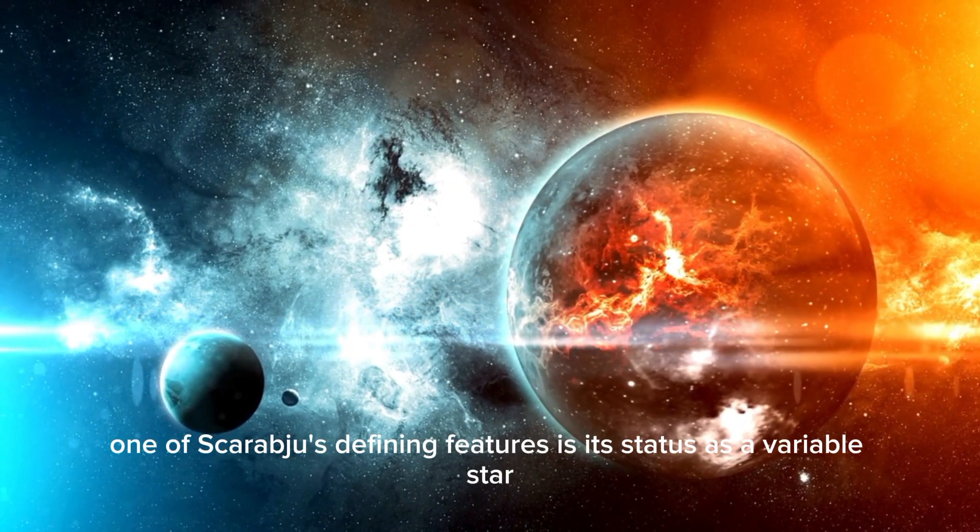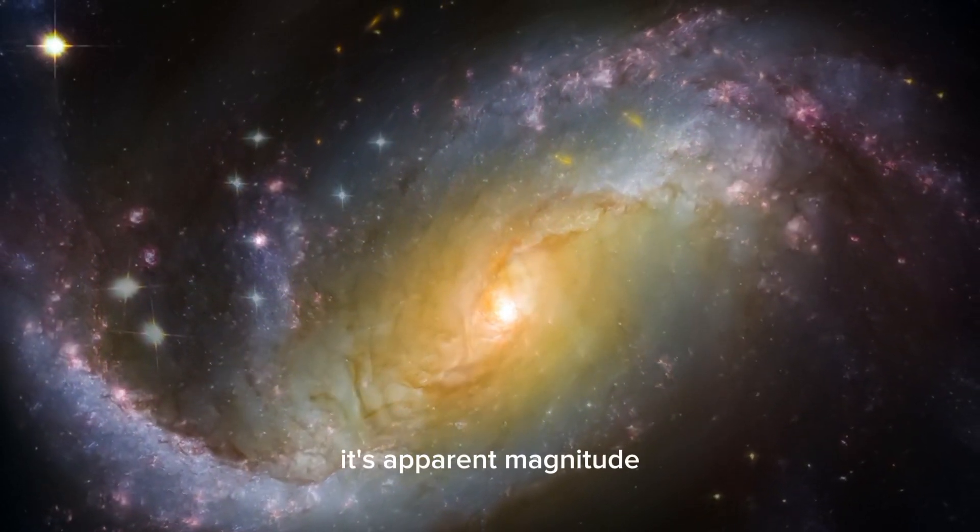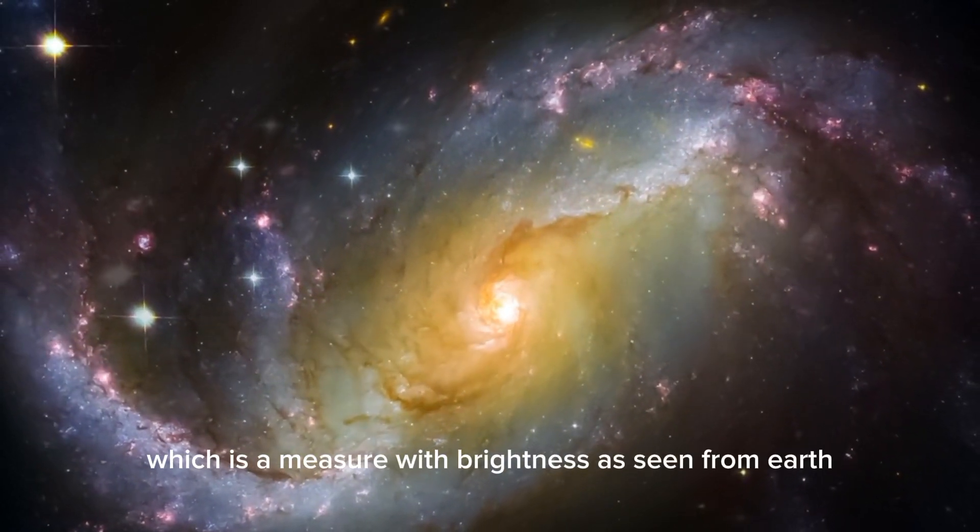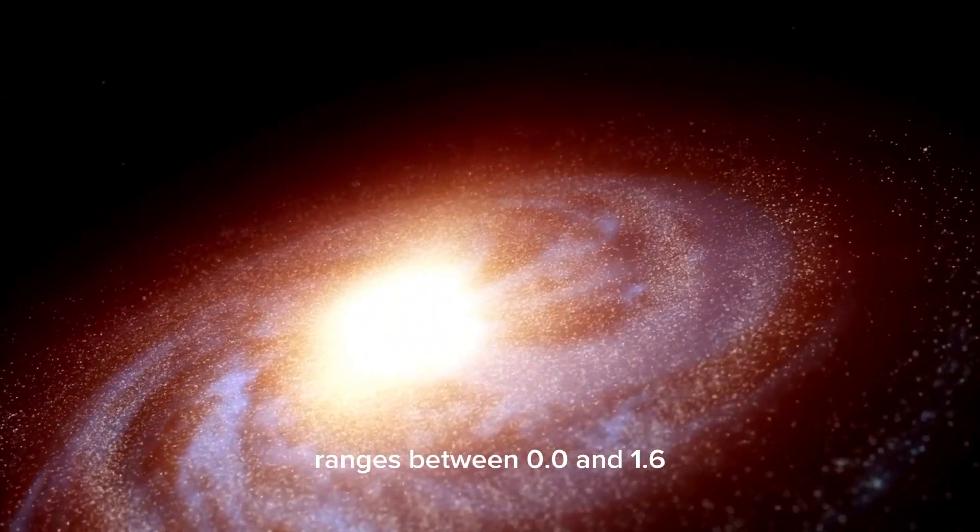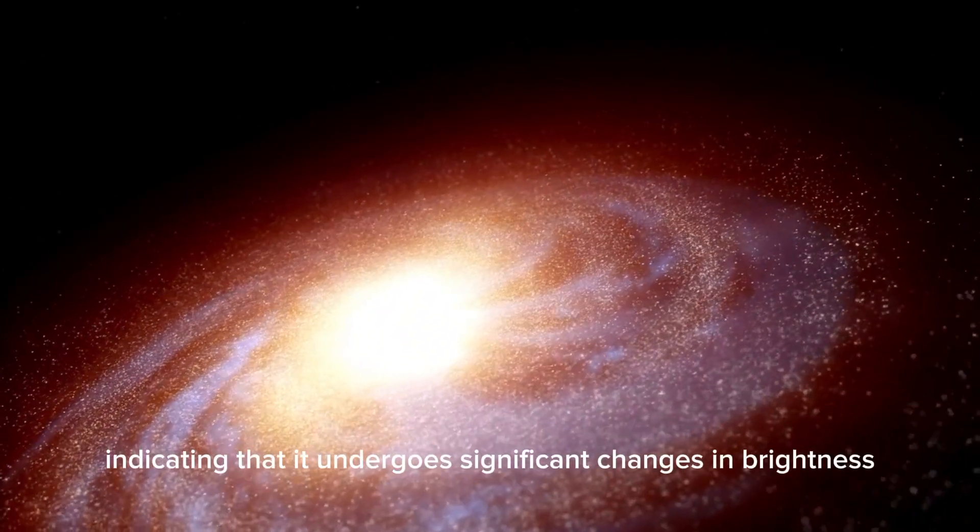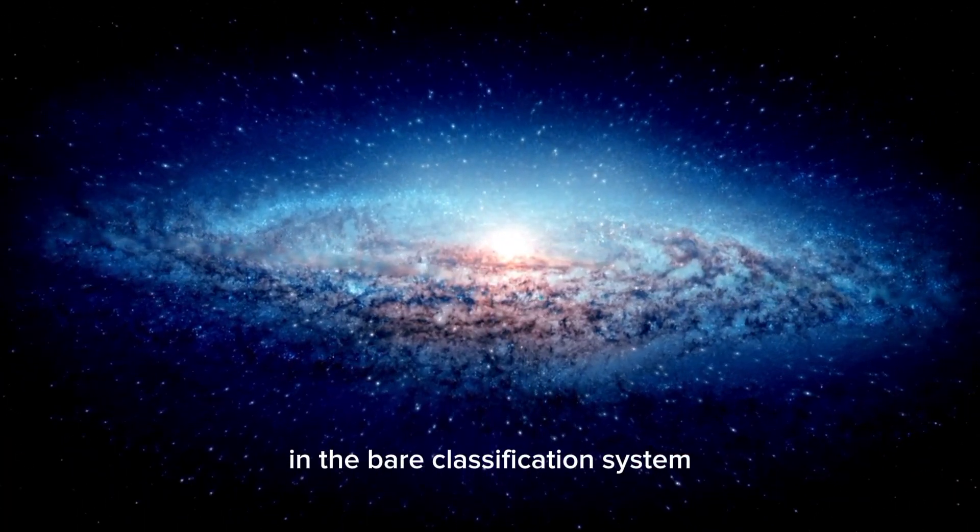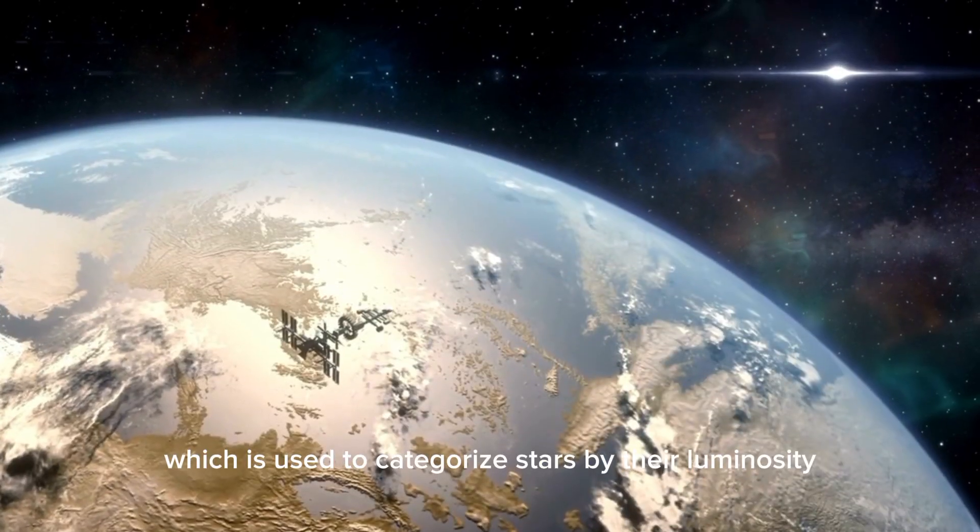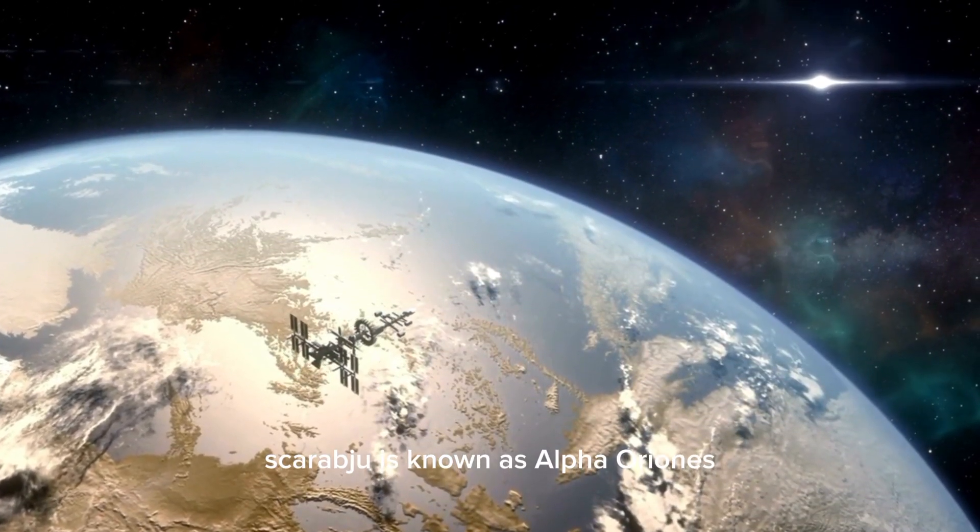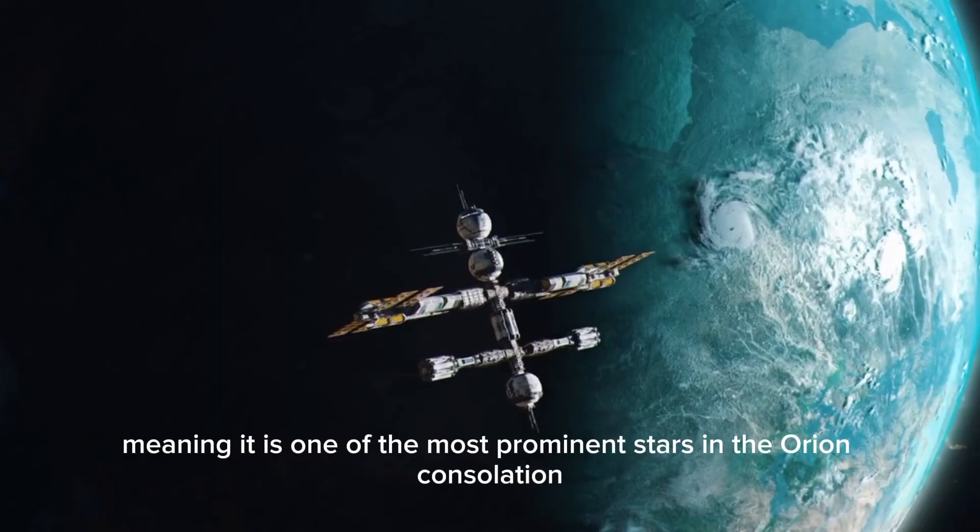One of Betelgeuse's defining features is its status as a variable star. Its apparent magnitude, which is a measure of its brightness as seen from Earth, ranges between 0.0 and 1.6, indicating that it undergoes significant changes in brightness. In the Bayer classification system, Betelgeuse is known as Alpha Orionis, meaning it is one of the most prominent stars in the Orion constellation.